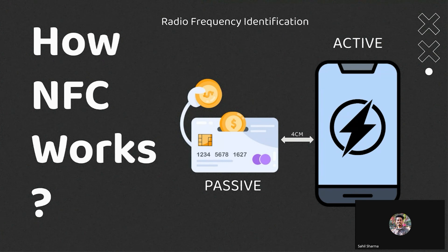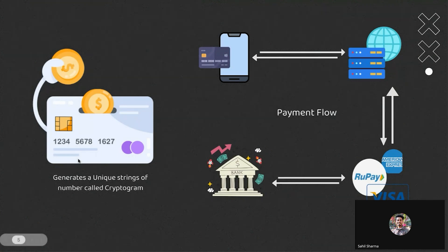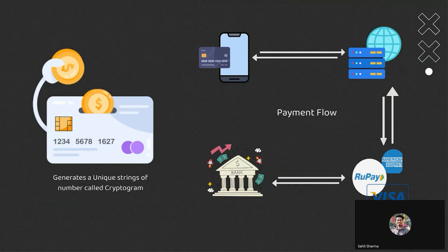Whenever the reader detects the card, it asks for information about the cardholder details, which are stored in static form on the chip — including the cardholder name, expiry date, and other details. This data is shared whenever you swipe the card. But when you tap the card, this data is combined with other transaction details to form a cryptogram — a unique string of numbers used by the issuer bank to validate your card.